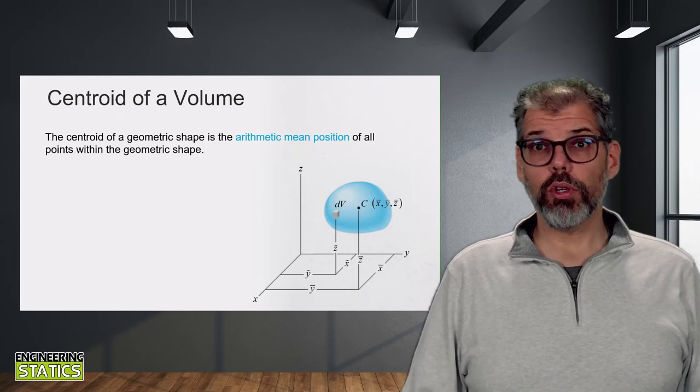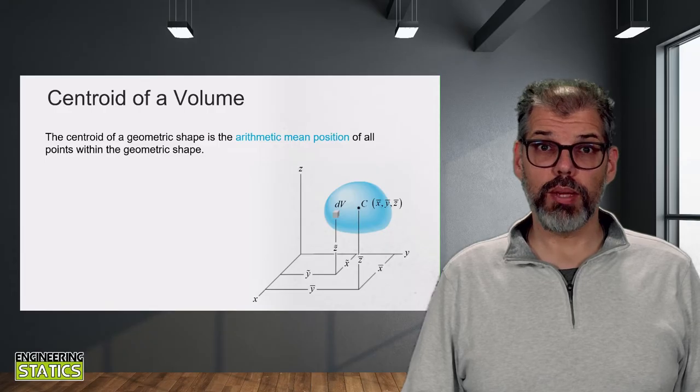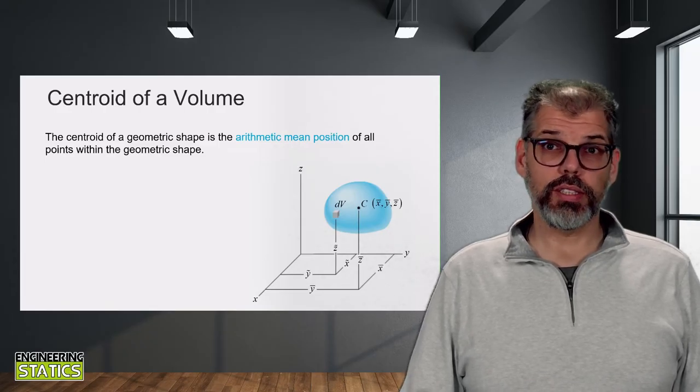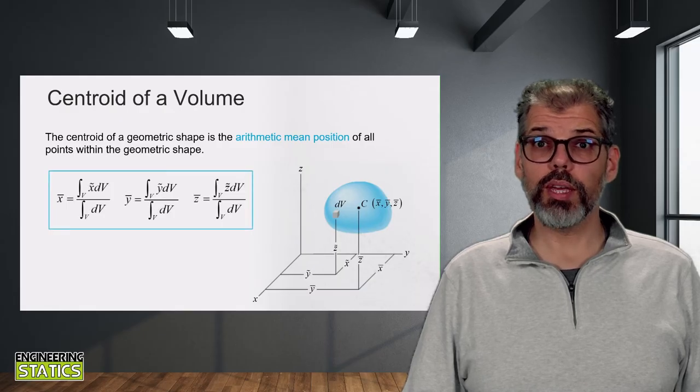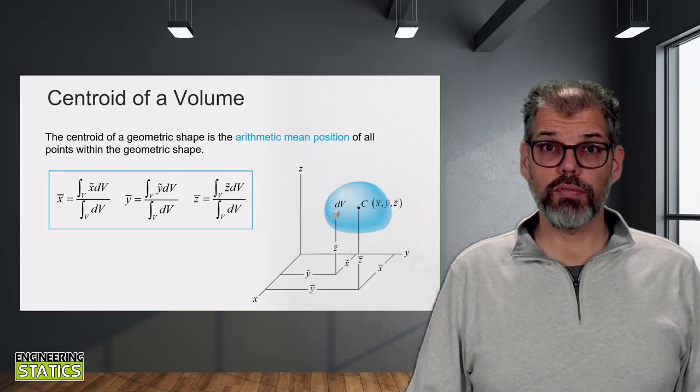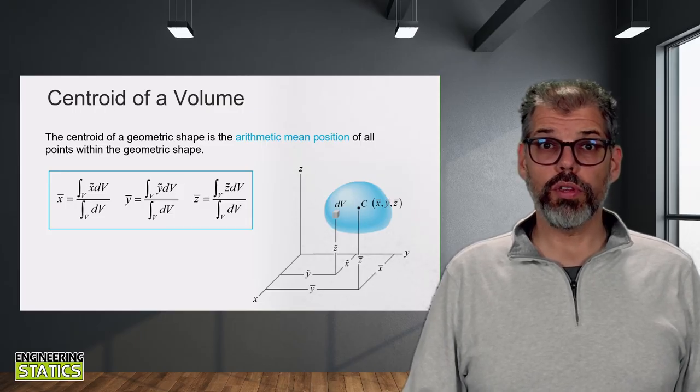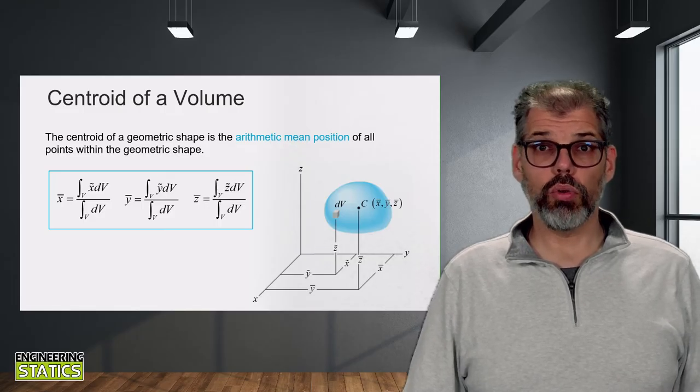That is how we would generalize the location of the centroid of an area, but sometimes we also deal with volumes. So how would this look in case of a volume? The centroid of a volume is still the average geometrical position of all the points within the shape itself. A volume is in three dimensions, however, so it will get three coordinates for the centroid, which can be obtained by integrating the position of an infinitesimal volume element times the volume of that element over the domain of the total volume of the body. This is then divided by the total volume of the body itself.